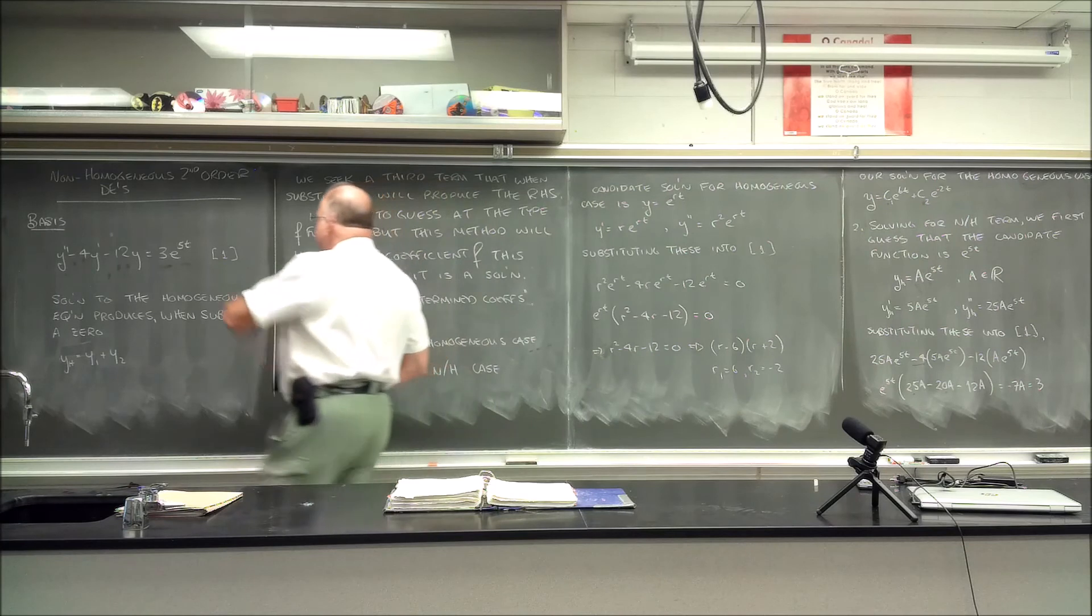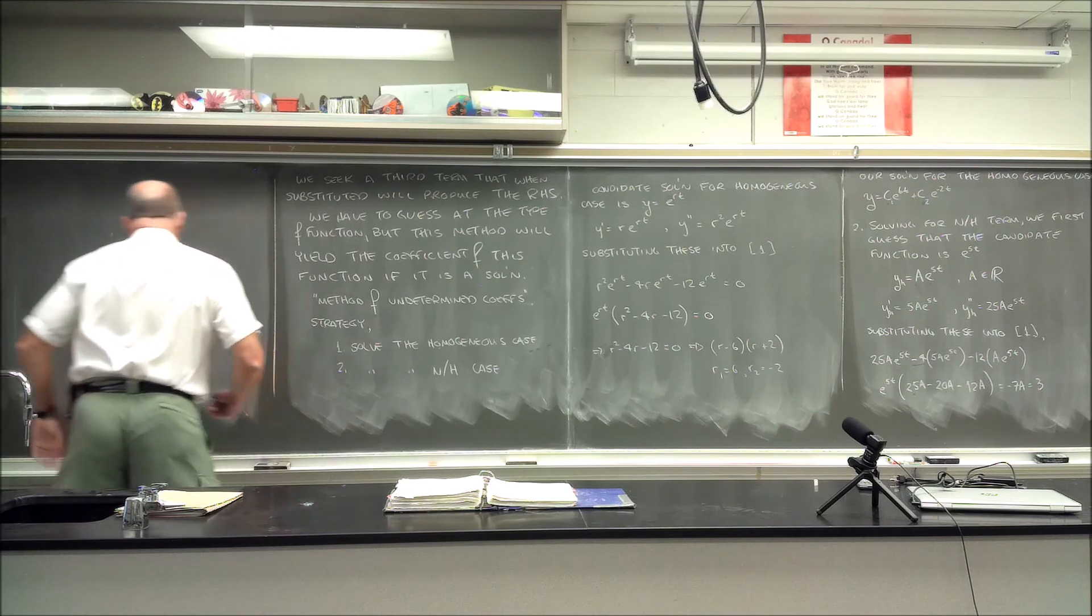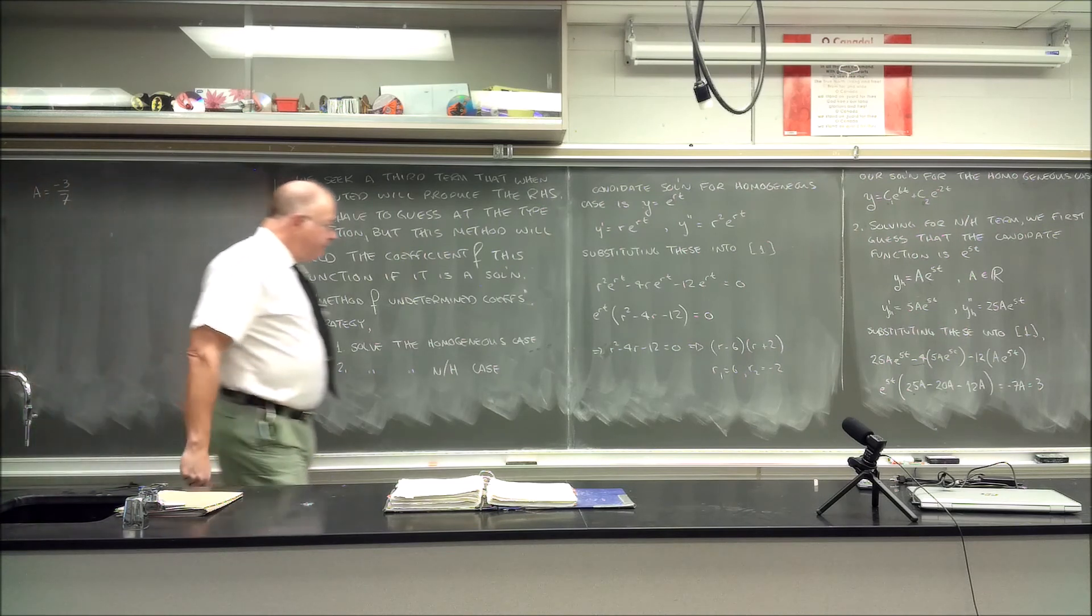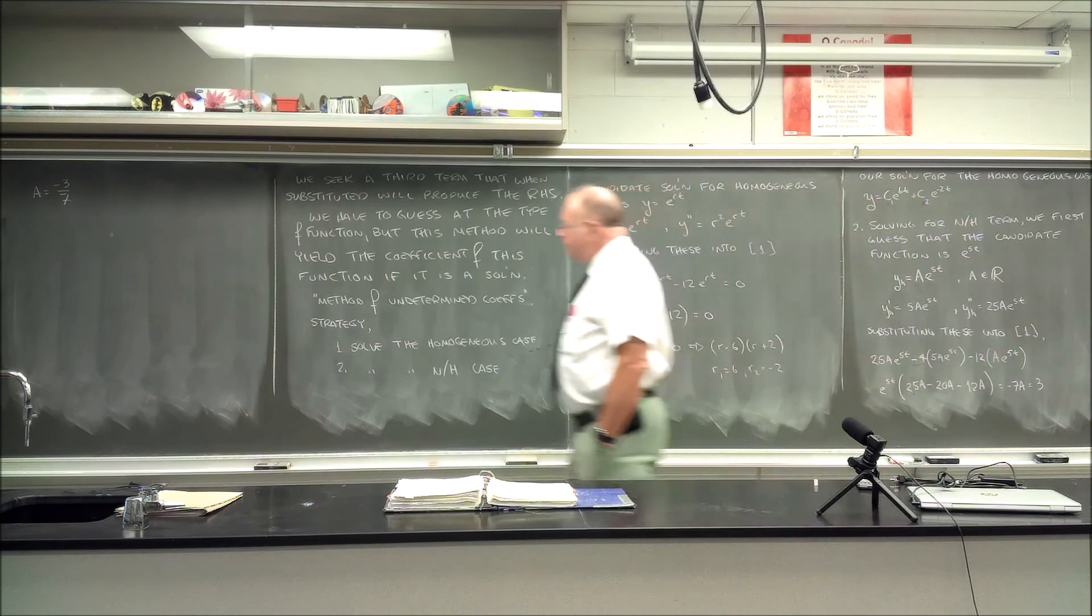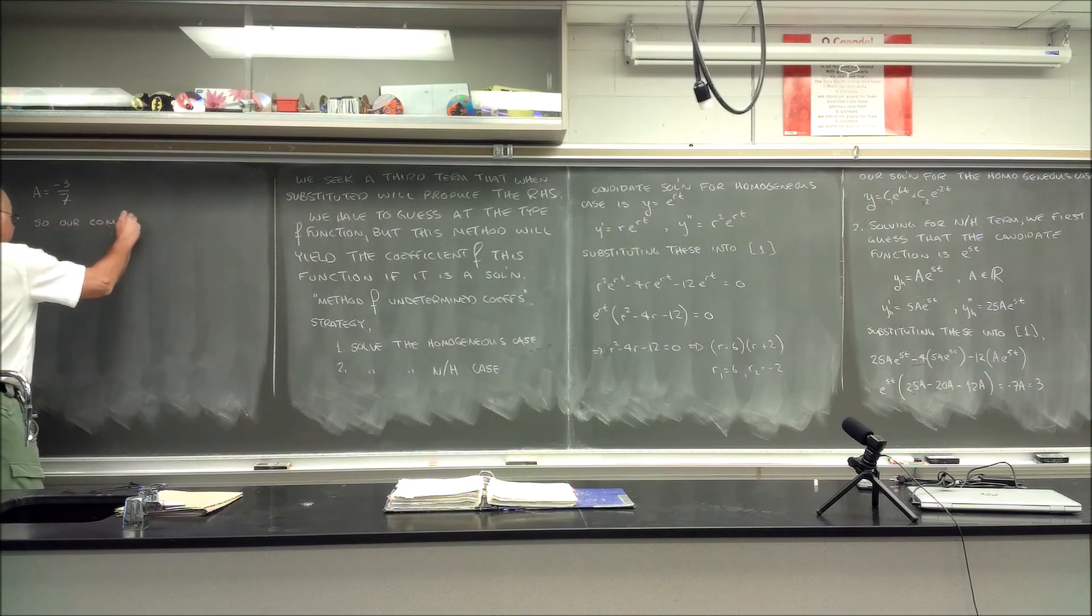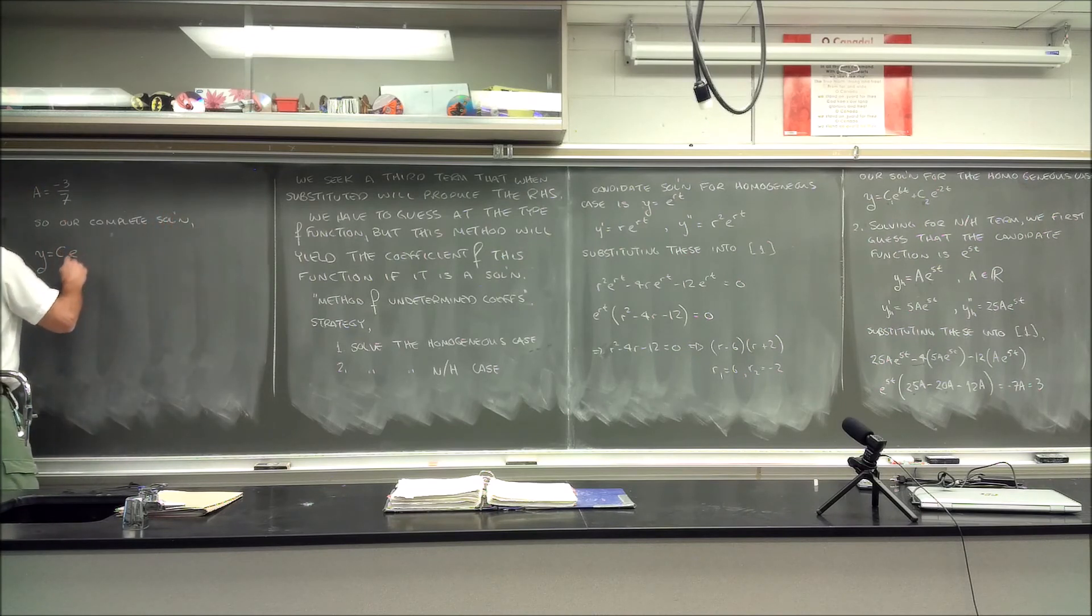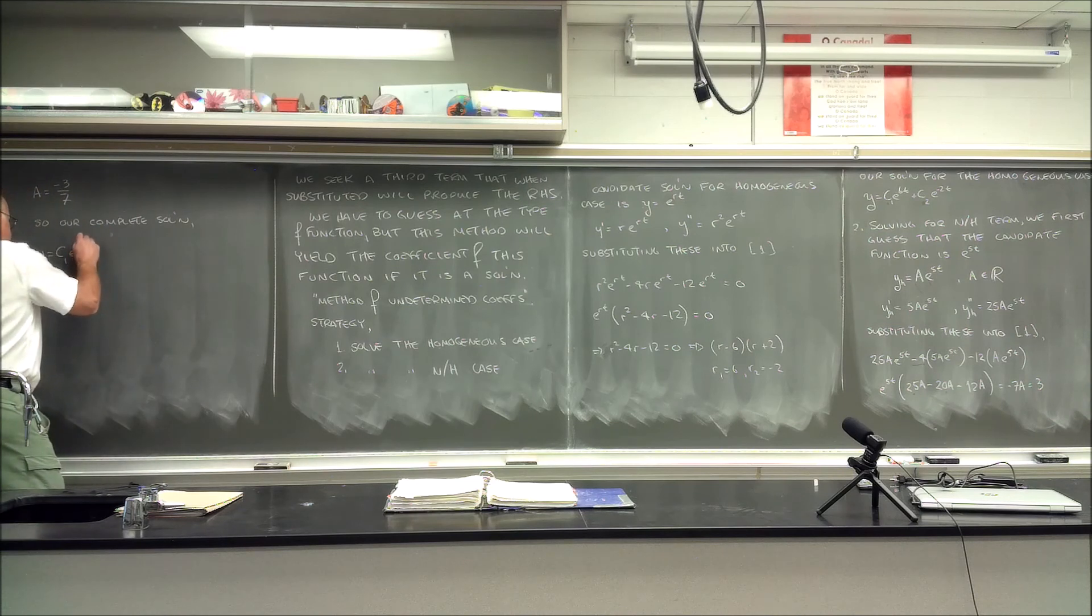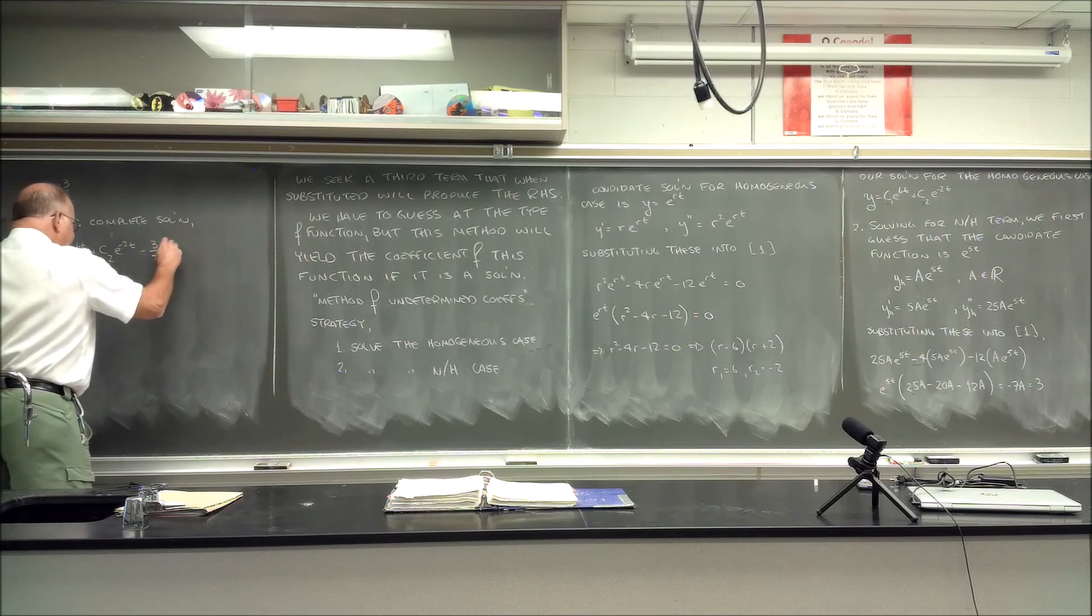And so then a is equal to -3/7 if I haven't goofed it. Yes because we divide by the -7, so let's see then. So our complete solution, y is equal to c_1*e^(6t) plus c_2*e^(-2t) - (3/7)*e^(5t).